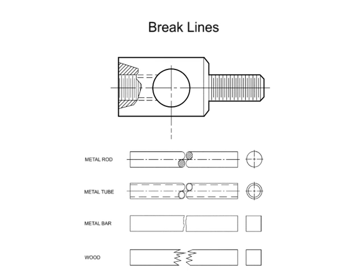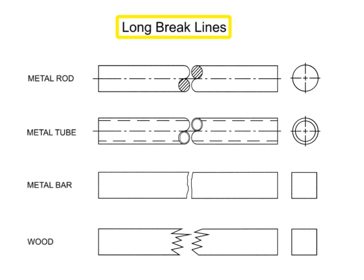There are two types of brake lines. Long brake lines are typically full, ruled lines with freehand zigzags that are used to show brakes in shafts, rods, tubes, rope, and so on, which have a portion of their length broken out for convenience.